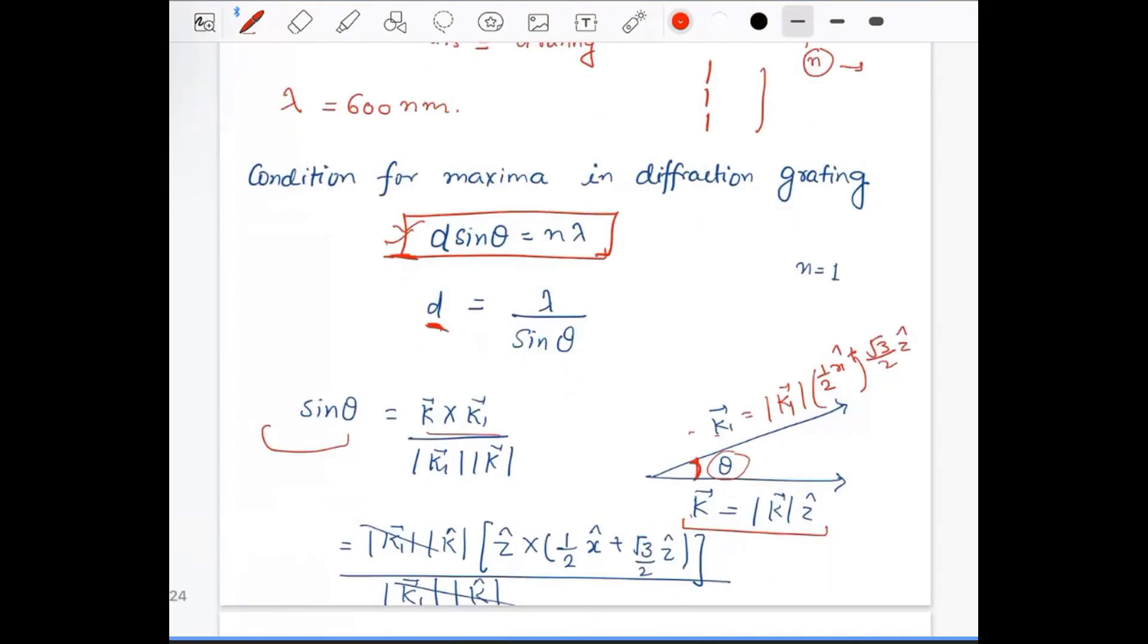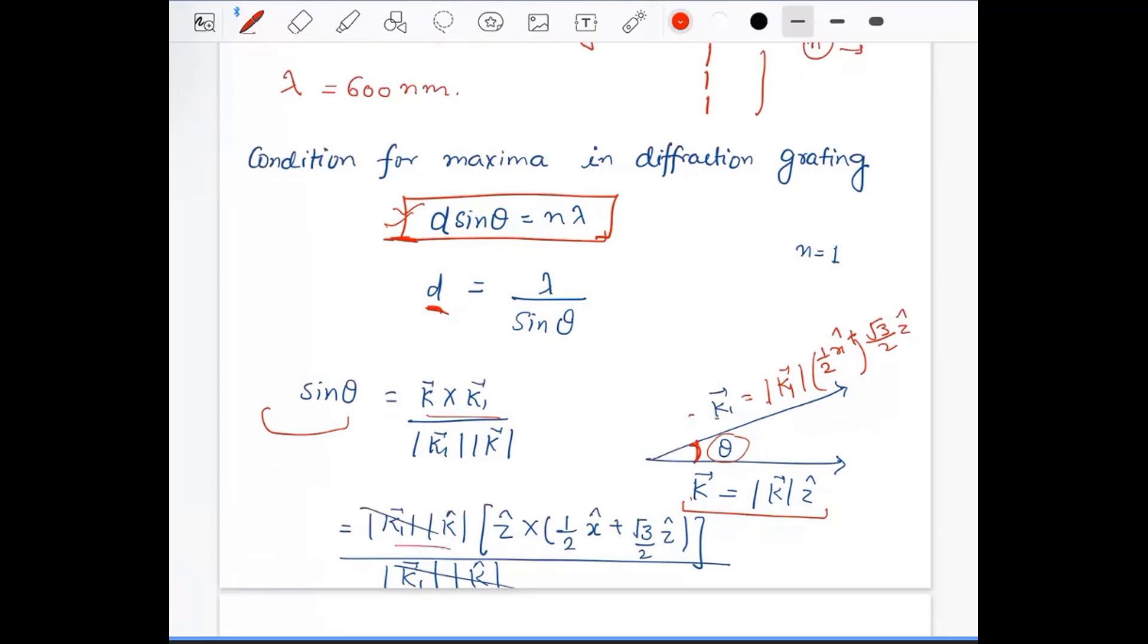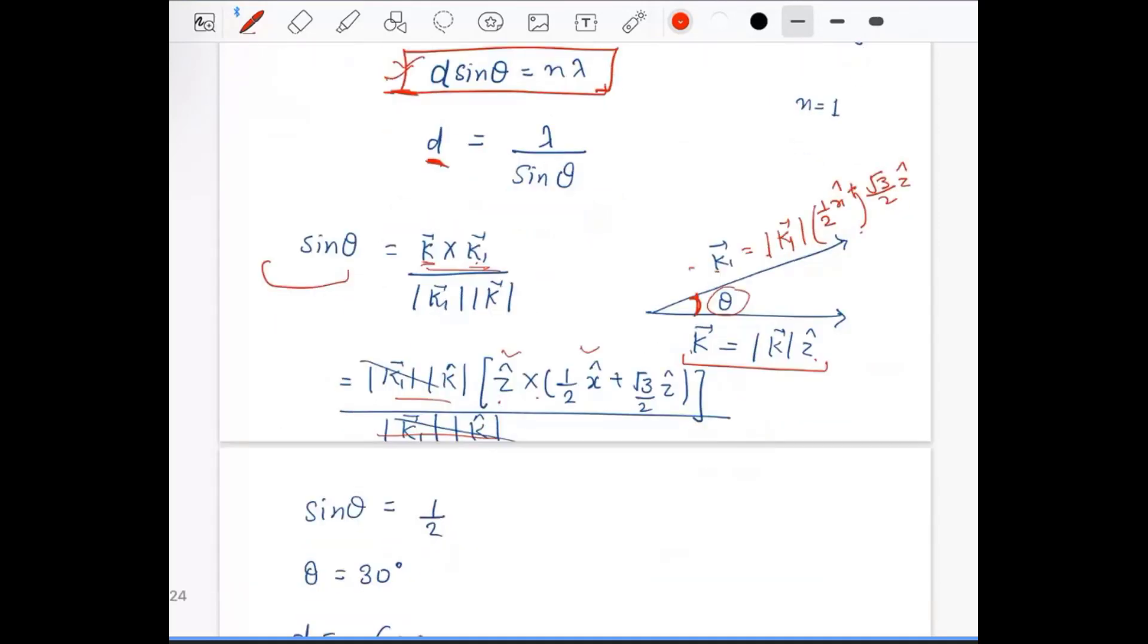I just take the cross product and divide by their magnitude. The magnitudes of k1 and k will cancel out. K is in the direction of ẑ, so k1 is in the direction of one-half x̂. The ẑ cross term with this term will give you one-half x̂. Plus ẑ, this term will give you zero.